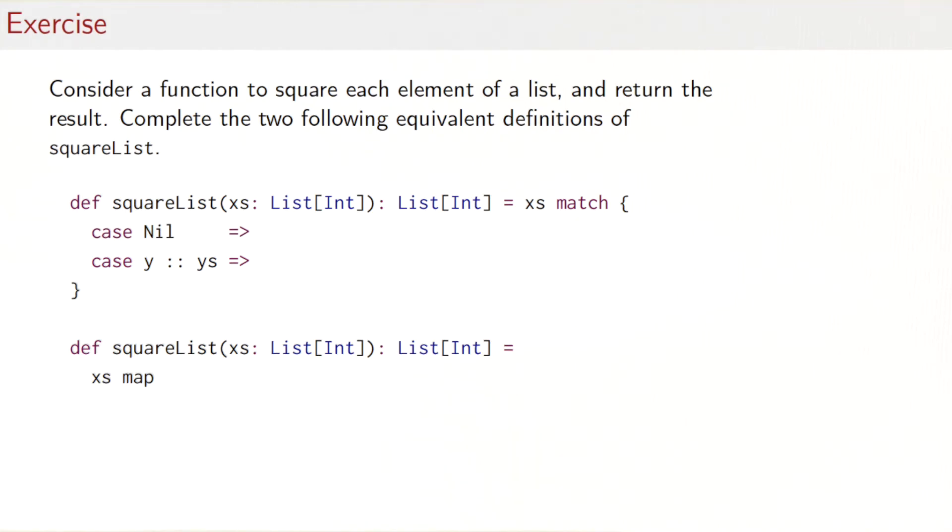So let's see how we would do that. In the pattern matching definition, to take the squares of an empty list, we would surely return the empty list again. To take the squares of a list with a head y and a tail ys, what do we do? Well, we start by taking the square of y, and we follow that by a recursive call of squareList of ys.